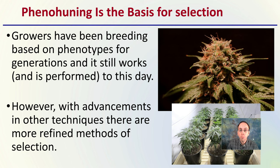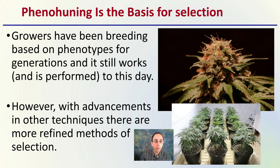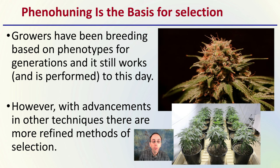Pheno hunting is the basis for selection. Growers have been breeding based on phenotypes for generations and it still works and is performed to this day. It's not something that's just completely going away — you just have to be aware of some of the limitations when you select this method. However, with advancements in other techniques, there are more refined methods for the selection process that can help speed up the process and allow growers to look at different characteristics of plants that may not have been possible years ago.